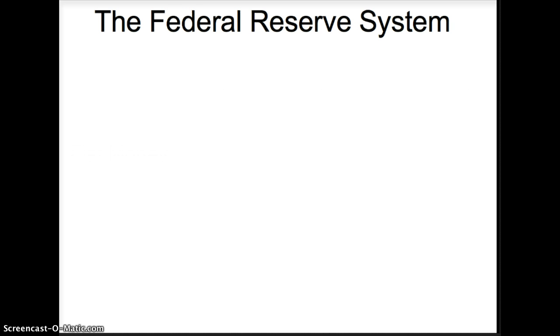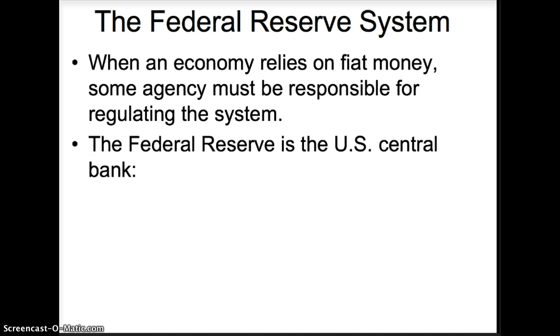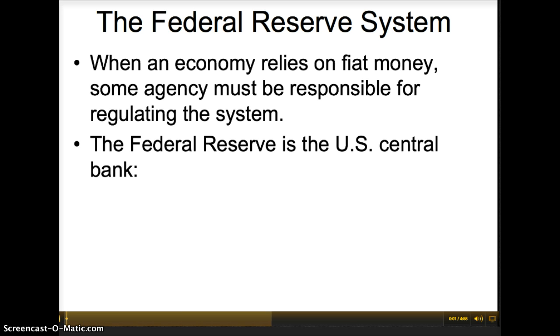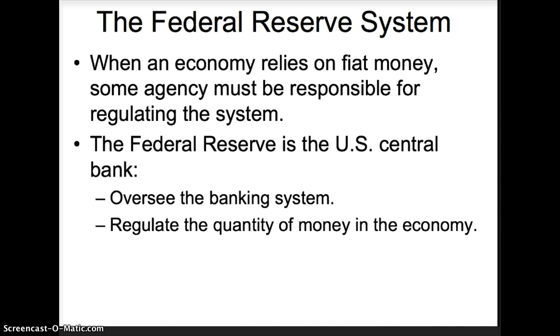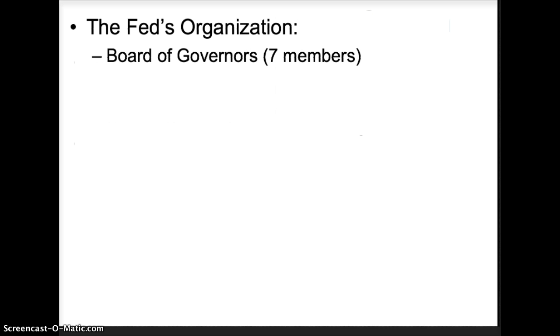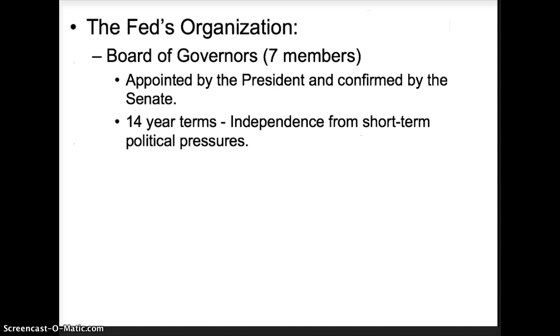When an economy relies on fiat money, some agency must be responsible for regulating the system. This is where the Federal Reserve comes in. The Federal Reserve is the United States Central Bank. They oversee the banking system and regulate the quantity of money in the economy. The Fed is organized by a board of governors with seven members. Each member is appointed by the President and confirmed by the Senate. Governors serve 14-year terms, which gives them independence from short-term political pressures.